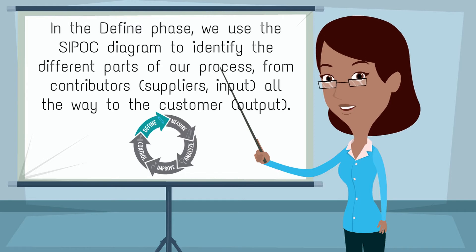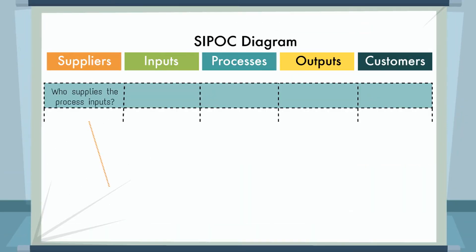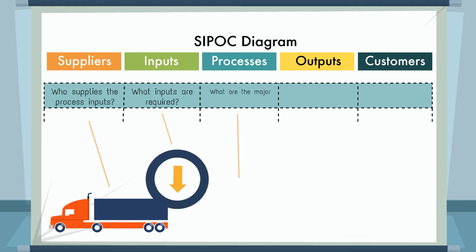Who supplies the process inputs? What inputs are required? What are the major steps in this process? What are the process outputs? Who receives the outputs?